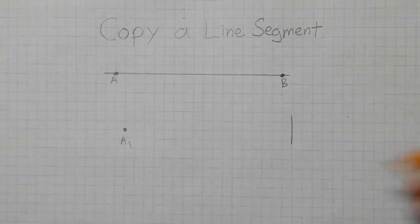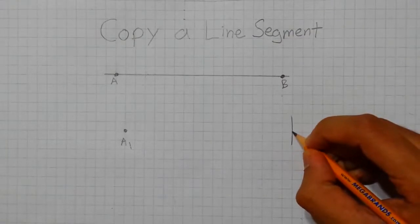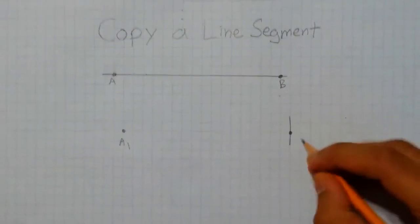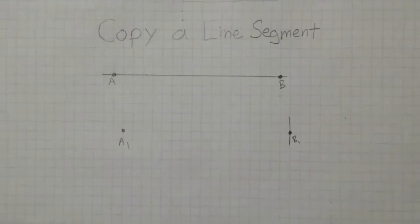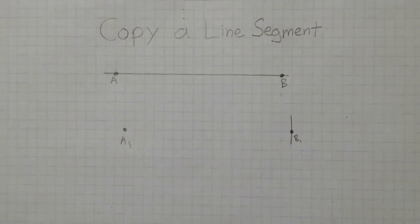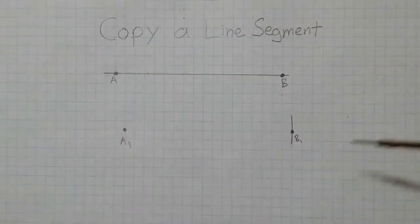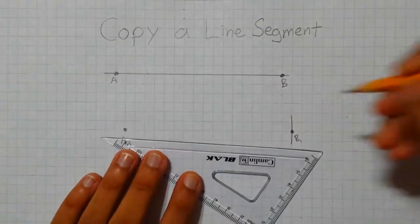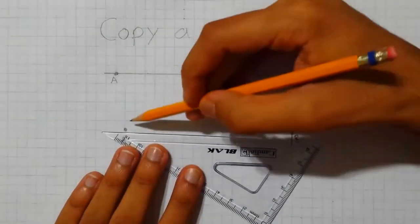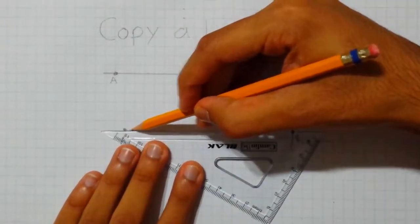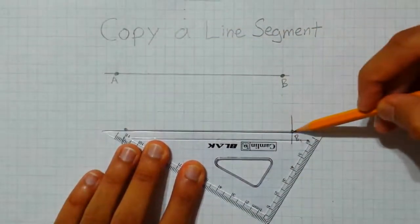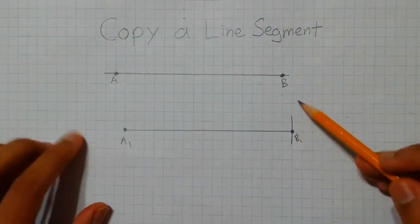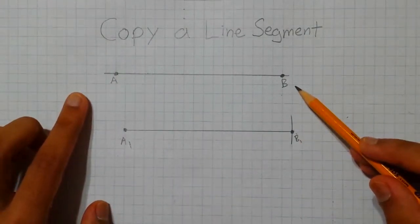Then, using the pencil, we will put one point on the arc and label that B1. Then, using the straight edge and a pencil, you will connect these two points, A1 and B1, to get a line segment identical to the original line segment.